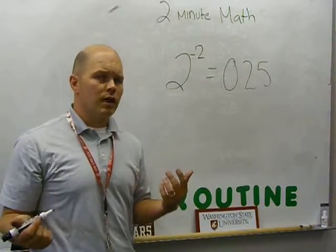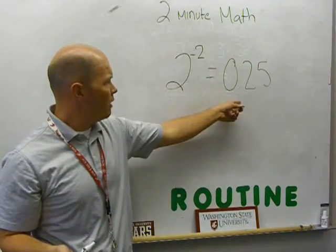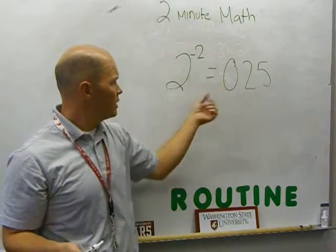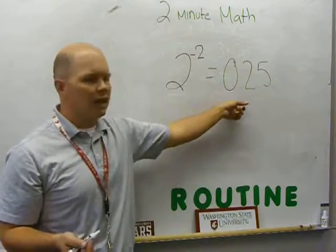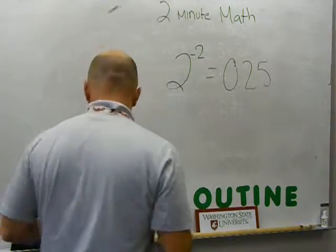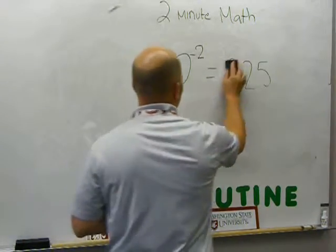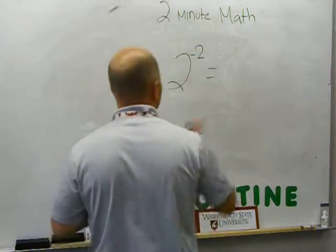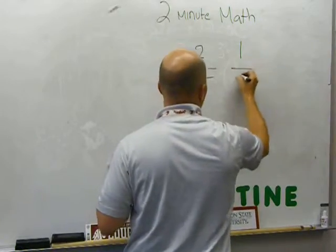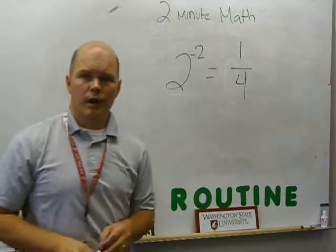But we also said, 0.25 is a decimal, this is non-decimal. What would this look like if we put it into fractional form? And we agreed, after doing some guessing and checking, that 0.25 written as a fraction can be written just like 1 over 4.